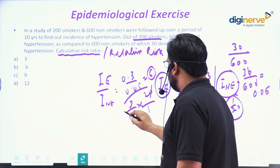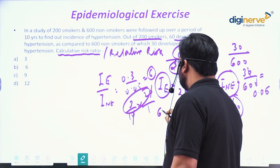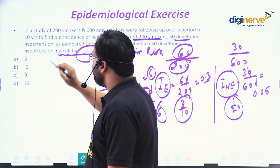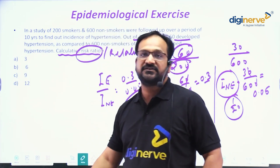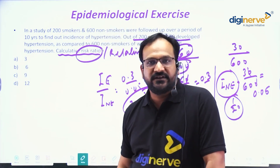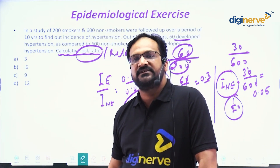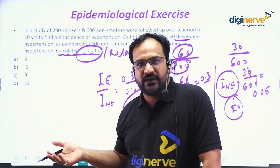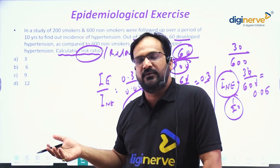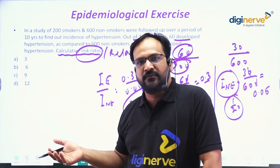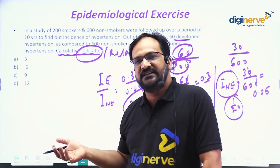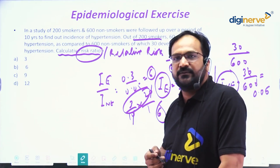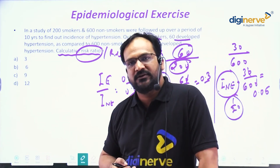So the risk ratio is 6. Similarly, you can calculate the attributable risk as well. The incidence among exposed and non-exposed has already been calculated. These types of epidemiological exercises are often asked in any medical entrance examination.